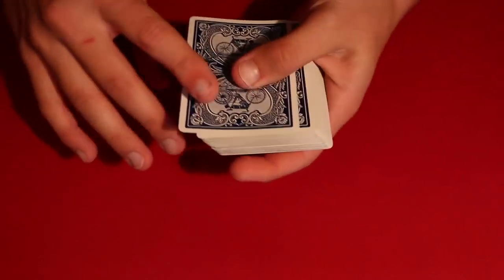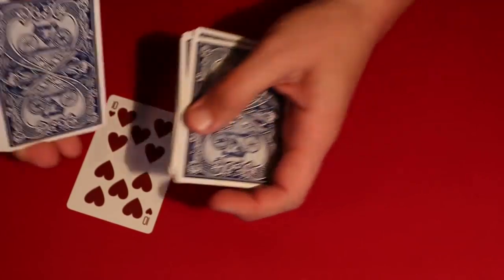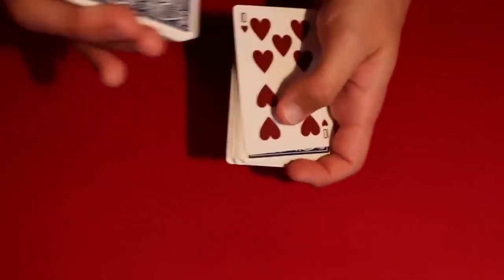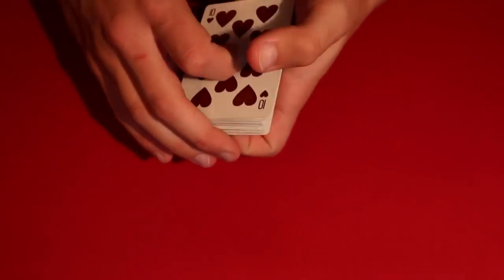So in real time, you have the spectator's card, they go ahead and say stop. Let's say they said stop right around here. You go ahead, you take their card, and you leave a nice little out-jog card like this, and just like that you brought their card to the top.